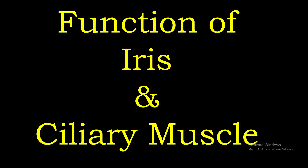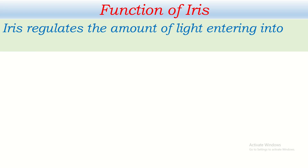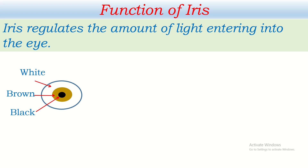Let's talk about the function of iris and ciliary muscles. The function of iris is that it regulates the amount of light entering into the eye. Whenever we have to see any object, the light coming from the object is controlled by the iris to enter into the eye, and this controlled amount of light helps the person to see the object clearly.